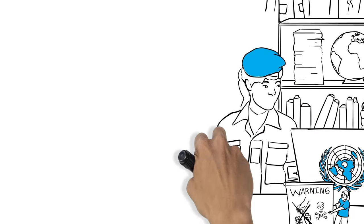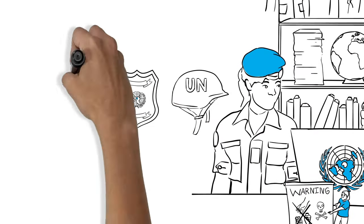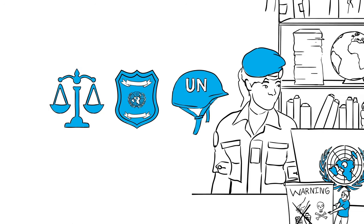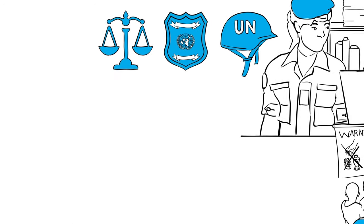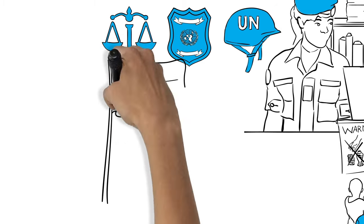Uniformed personnel work in military, police, or justice and corrections positions. To join as UN military, police, or justice and corrections personnel, you will first have to be serving with your own relevant national services.